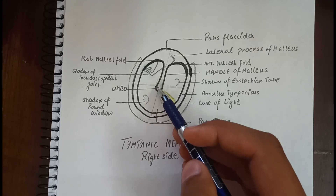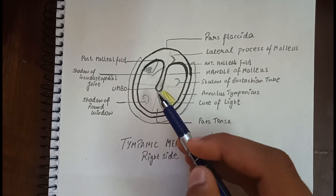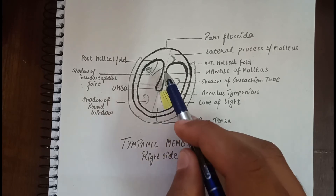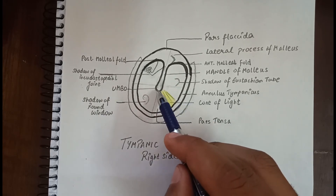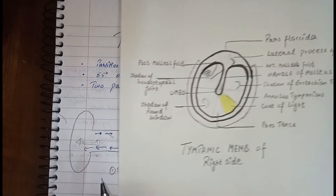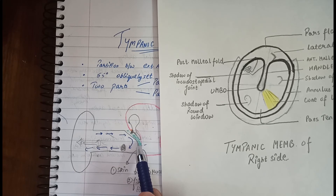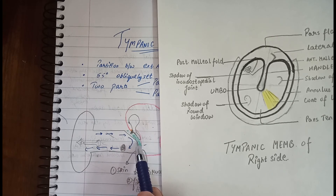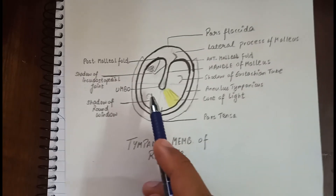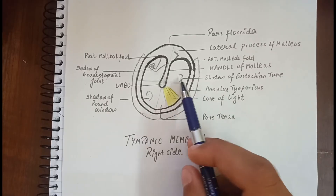The folds are attached to the handle of malleus, which can be seen in the diagram. The center part of the pars tensa is somewhat tented inward due to the handle of malleus pulling the membrane inward. This center part is called the umbo.